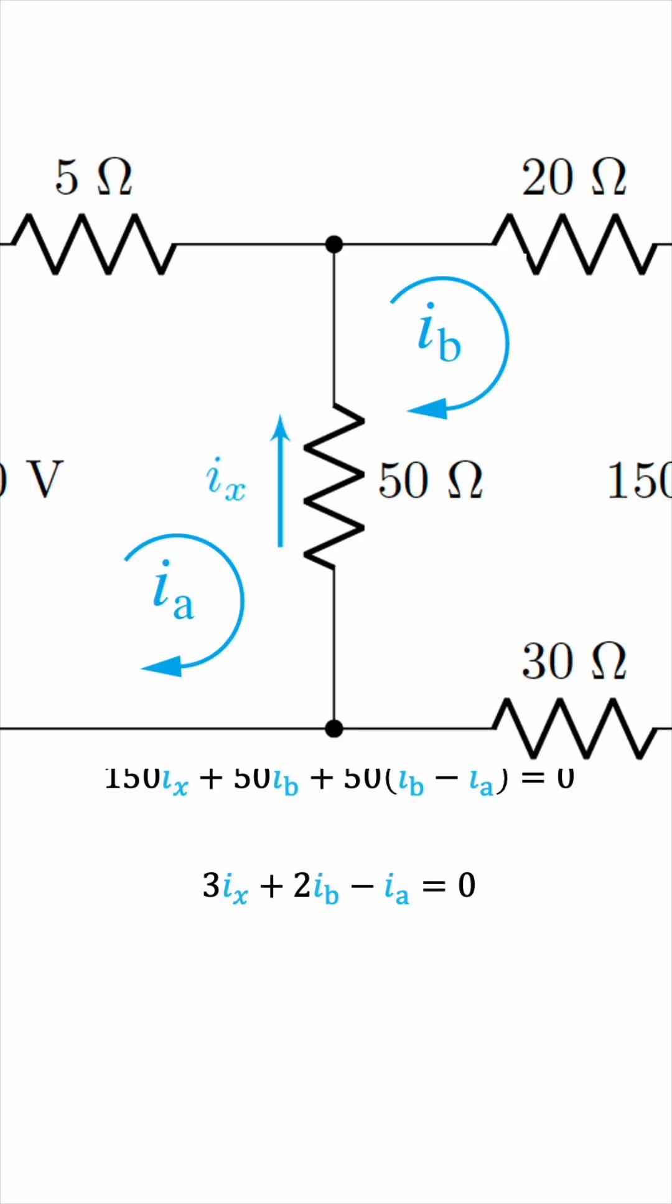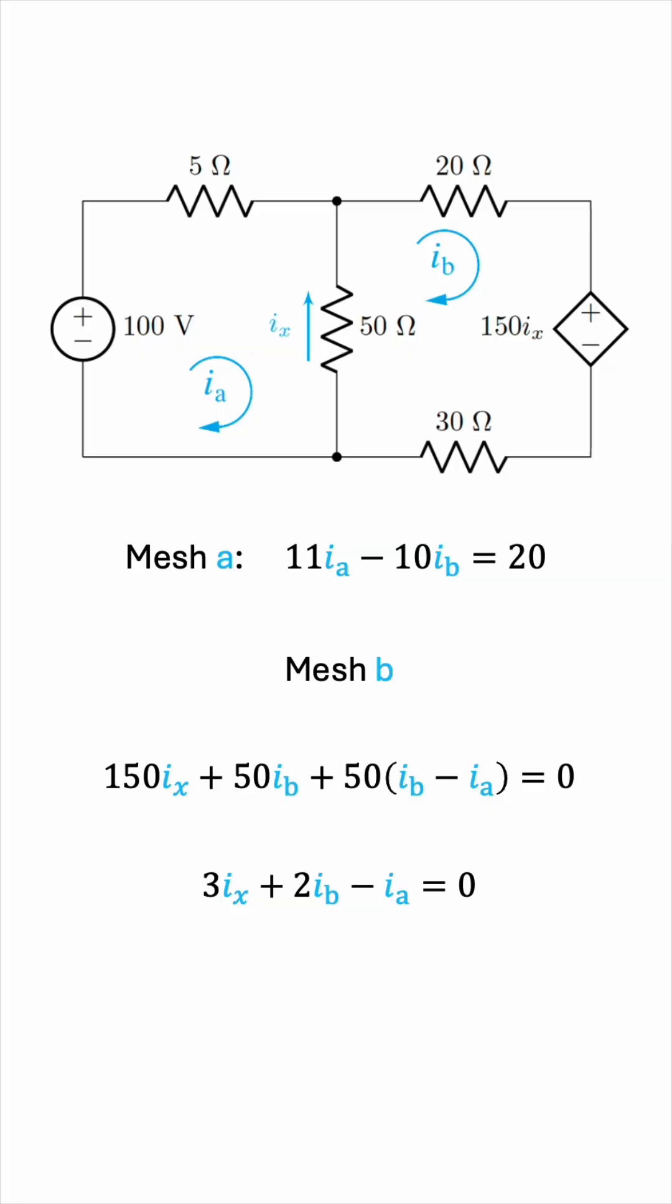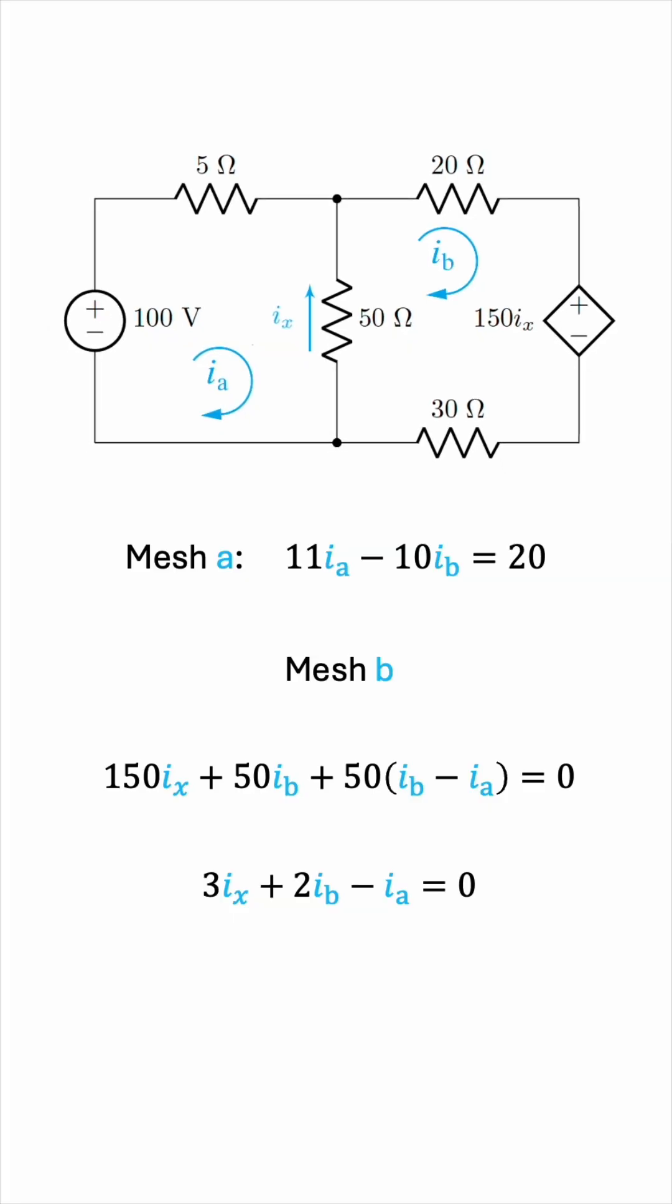Ia, however, is flowing down through the 50 ohm resistor. This must mean that Ix is Ib, the current that agrees with it, minus Ia, the current that opposes it. So, replacing Ix by Ib minus Ia and expanding, we can then group like terms, and the equation will end up being negative 4Ia plus 5Ib equals 0.